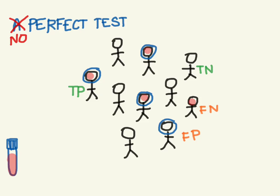The first concept you want to get is: there is no such thing as a perfect test. All of them are going to make mistakes. Sometimes a mistake is going to be a false negative, where it fails to pick up something, or it's going to be a false positive, where it erroneously picks up something that it shouldn't have.